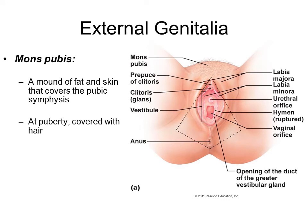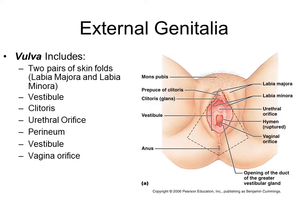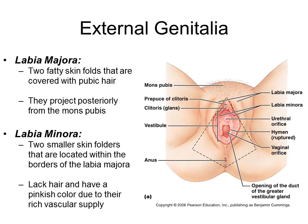Looking at the external genitalia of the female: the mons pubis is the fatty skin covering the pubic symphysis, which becomes covered with hair at puberty. Beyond that is the vulva, which includes two pairs of skin folds, the vestibule, the clitoris, the urethral orifice, vaginal orifice, and perineum. The outer fatty skin folds are the labia majora, covered with pubic hair. The inner, smaller skin folds are the labia minora.